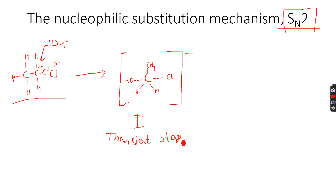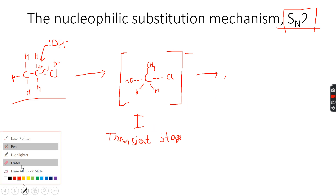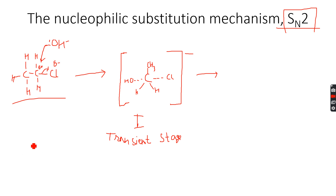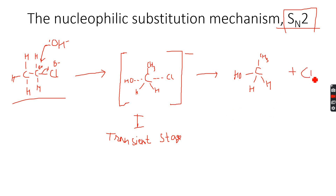Because the transient stage is unstable, the chlorine is eliminated and the OH forms a full bond with the carbon. So chloroethane is converted to ethanol — an alcohol has been formed. The Cl⁻ is called the leaving group. A lone pair is shown on the chlorine to indicate it was previously bonded to the carbon.